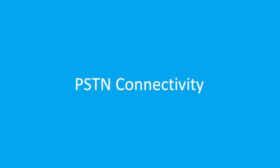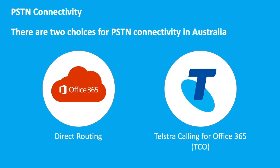On to PSTN connectivity. How do we connect Microsoft Teams to the PSTN? There are pretty much two choices in Australia: you can go down the Direct Routing route, or you can buy TCO — Telstra Calling for Office 365. You can also mix and match the two within the same tenant. One thing you can't do at present is add TCO calling to a tenant not in Australia — though I'm told that is coming at some point.